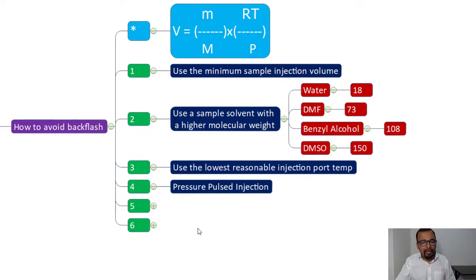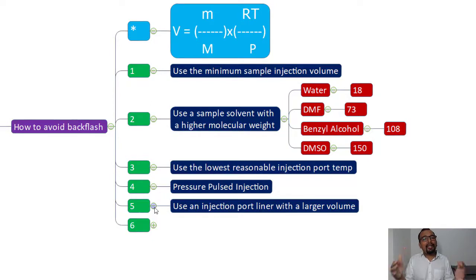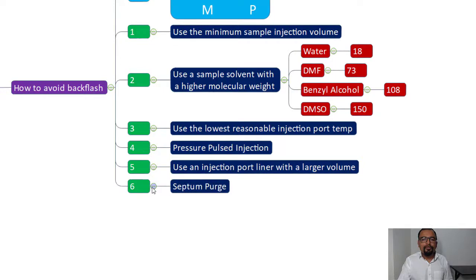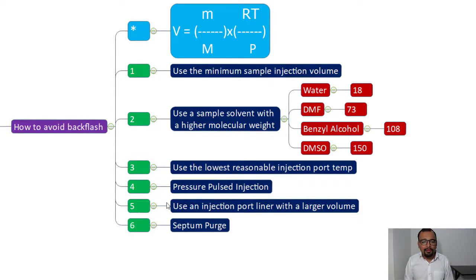The fifth solution is to use an injection port liner with a larger volume. If the glass liner volume is 0.9 mL, increasing it to 1.5 mL gives more space to accommodate the vaporized sample. The sixth solution is the septum purge — if back flash is occurring, a proper septum purge can remove vaporized sample that reaches near the septa or carrier gas line. These are the six different ways to avoid back flash.